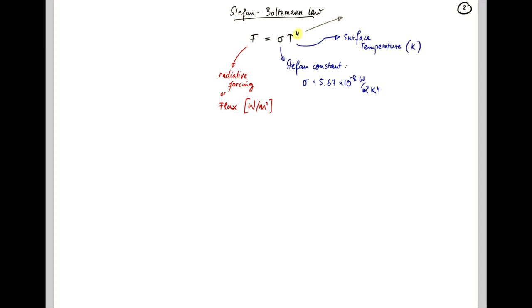And having this power of 4 dependence on the temperature means that the radiative forcing is very sensitive to temperature changes. For example, if you double the temperature of your radiating body, you increase the energy flux that it emits by a factor of 16.